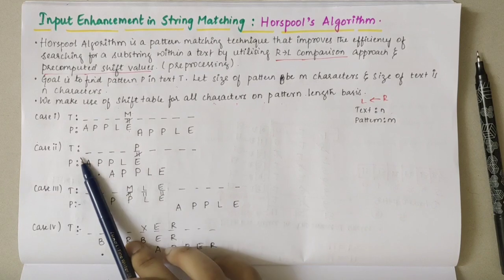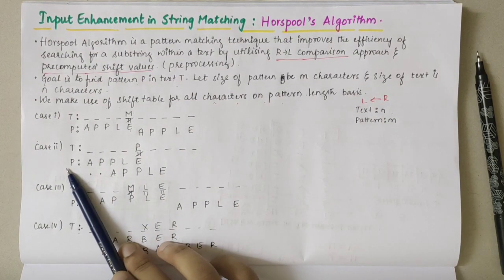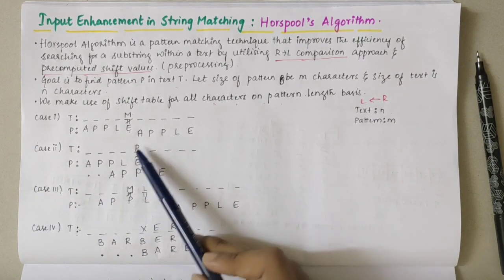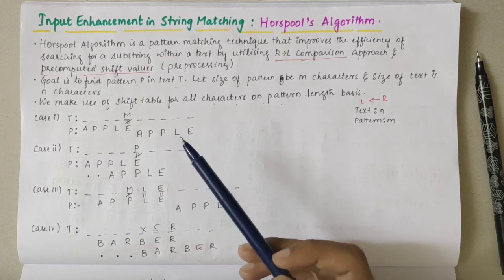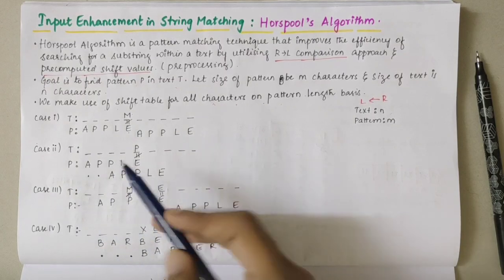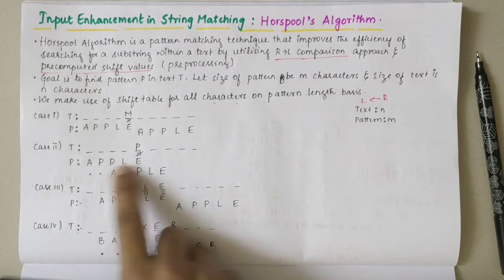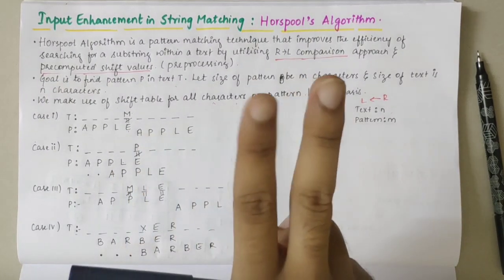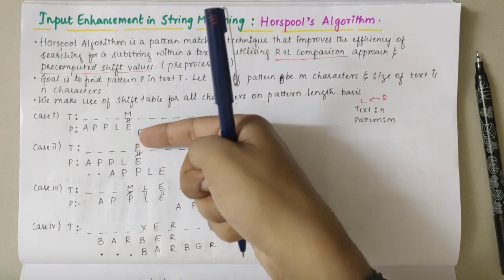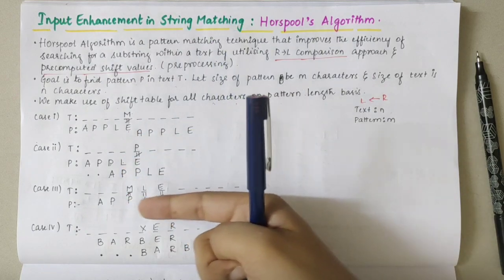For the second condition, we again have a text string with some letters and the pattern A-P-P-L-E. We have P in the text but E and P are not matching. The shift should align to the rightmost occurrence of P in the pattern. Checking from the right: L doesn't match, but P matches here. To align that P, I need to perform 2 shifts, so after 2 shifts the rightmost P in the pattern will be aligned with the P in the text.